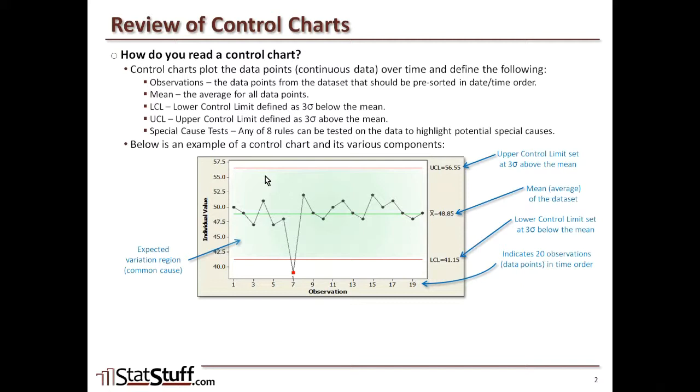Then we have over here this region that falls within the red lines. This is the expected variation region, where that's where we would expect there to be some common cause variation falling back and forth around the mean, hopefully not falling outside of these upper and lower control limits, which is our unexpected variation region. That's where we might see some obvious special causes when they fall outside of our upper and lower control limits that are defined here by the red lines. And we also see in this example, there's one data point that falls below into that area. So we can say for this observation number seven, it failed the test because the data point fell outside of the lower or upper control limit area.